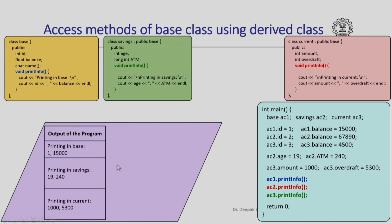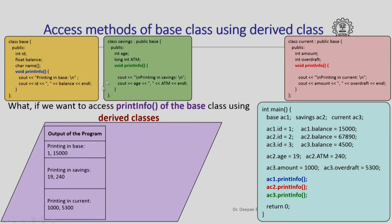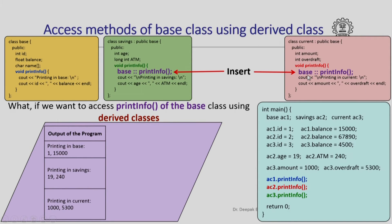This summarizes what we have seen. But what if, in the method print info which I am redefining within the savings class or current class, I also want to print the values of ID and balance by invoking the print info method of the base class? This is a very interesting situation: I have redefined print info in the derived class, but I also want to use the print info method of the base class. How do I do that?